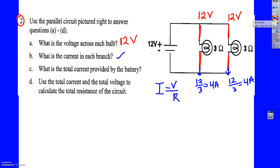Next: what is the total current provided by the battery? So what I do is I just add them up. 4 plus 4 is going to equal 8 amps of current.